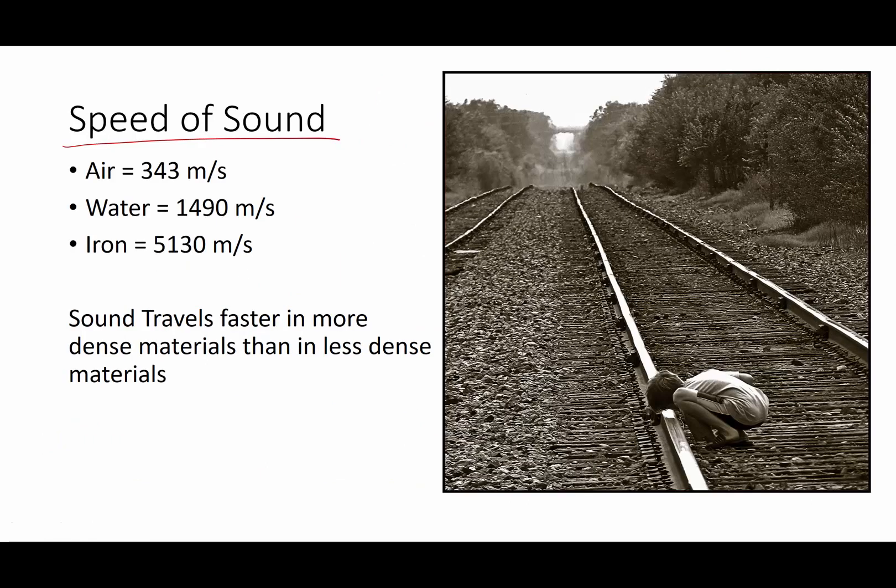Speed of sound is going to change. Now, we use 343 at about 20 degrees Celsius, which is about 68 Fahrenheit on a dry day. Water is about 1490 meters per second. Now, that's fresh water. And iron is a little over 5,000 meters per second. On your physics constant sheet, I give you some speeds of sound, so you can refer to those. The more dense a material, the faster sound is going to travel, and it's going to be slower in less dense material.